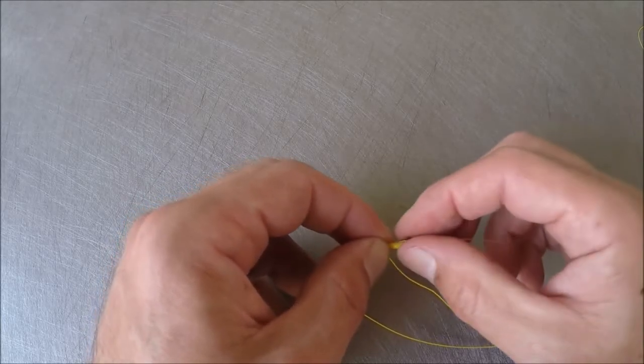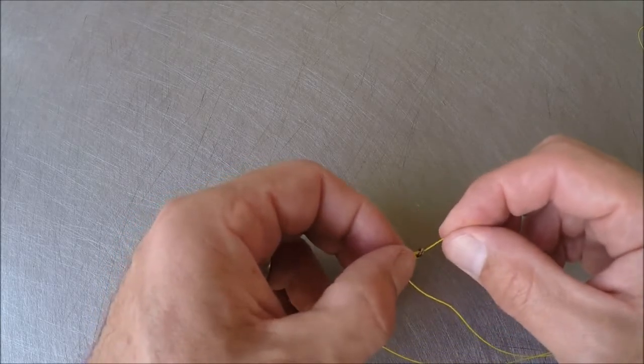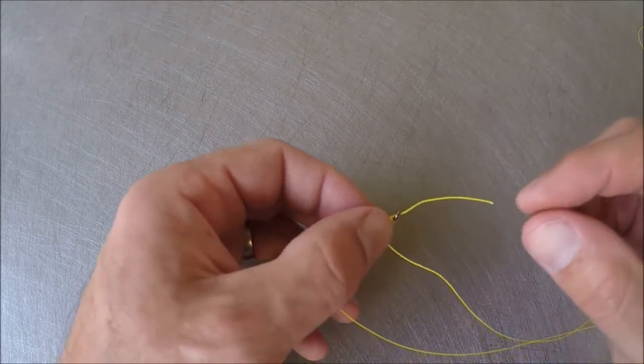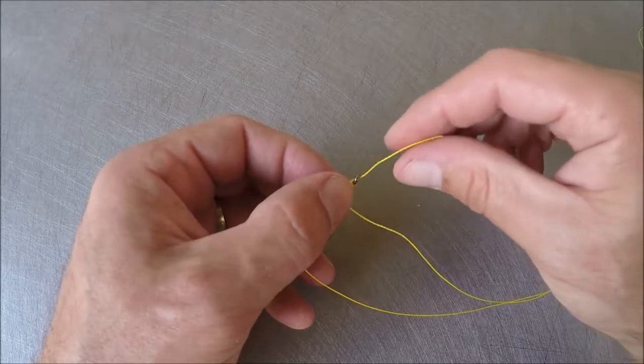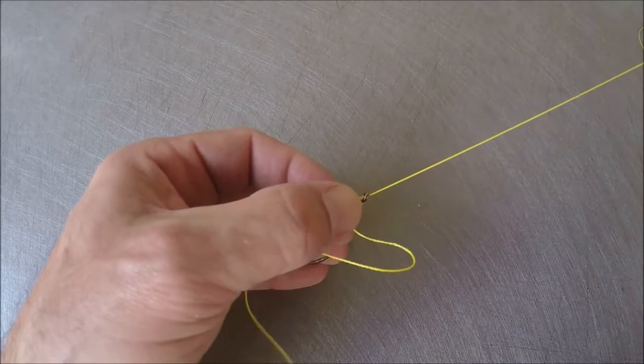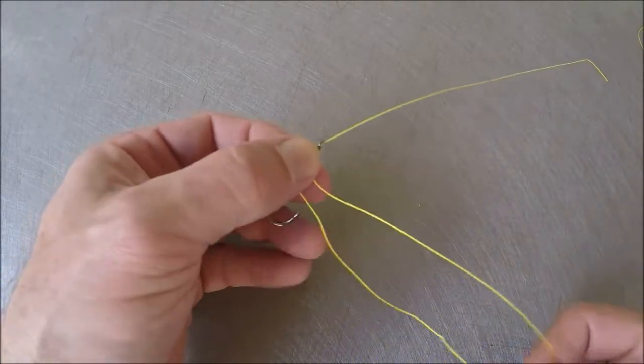Now I'm gonna grab this main line and here's what I'm gonna do. I'm gonna just slide while holding this, not tight but just holding it so it doesn't come unraveled. I'm gonna pull this main line and you can see this is shrinking up. I'm gonna pull that all the way through just like that.